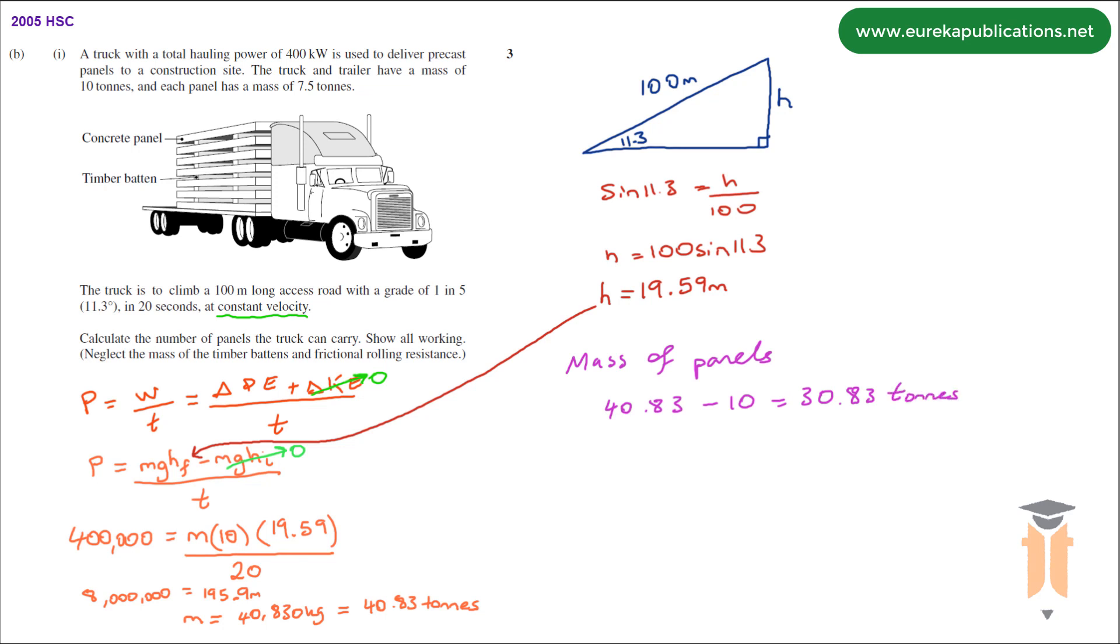Now to find how many panels we have in total we simply divide the mass of the panels by each panel. Number of panels is 30.83 divided by 7.5 and that gives us a total of 4.11.